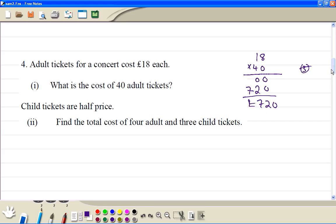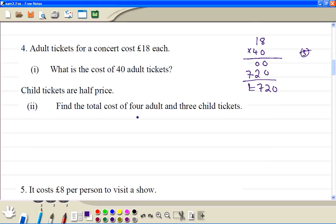Part 2. The cost of 4 adults, so 18 times 4, you can just use the factor 72. Then for the children, it's 9 times 3 which is 27, and you add. So the cost here is £99.